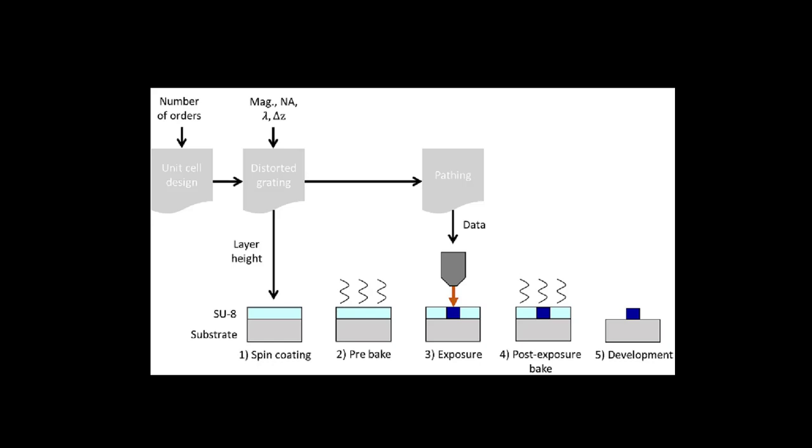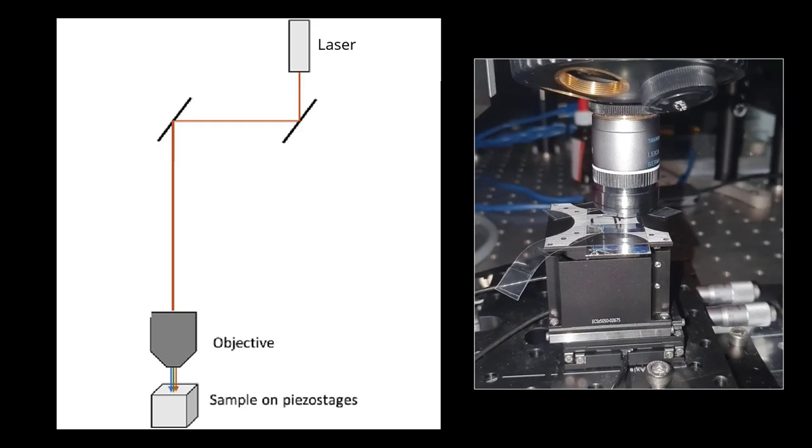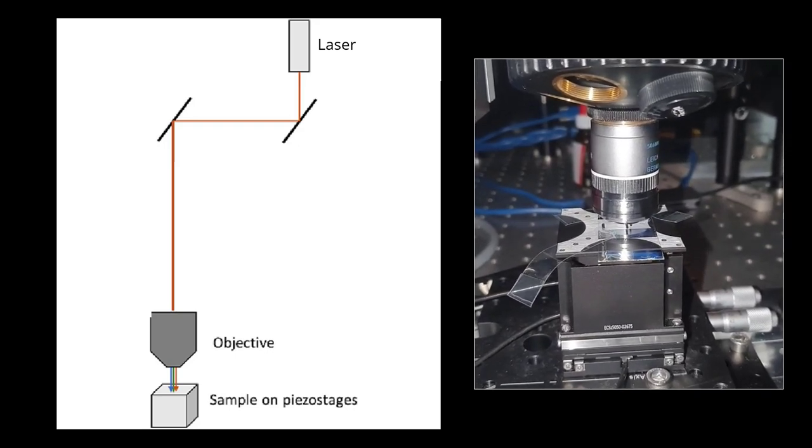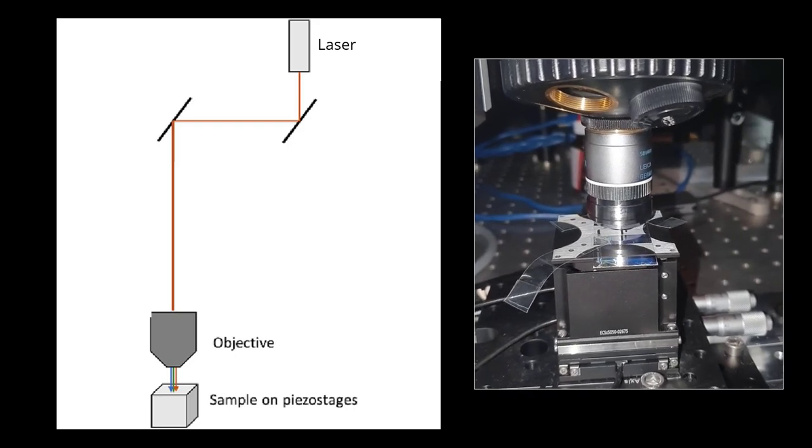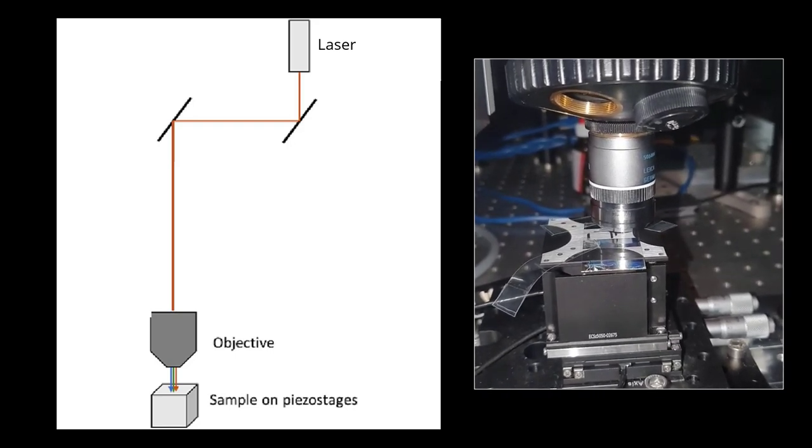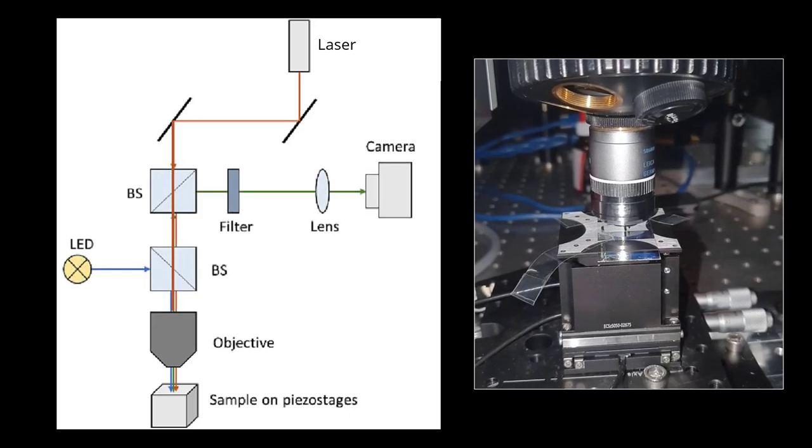In case you don't have a commercial lithography system, here's the one we built. Quite simple. A laser is focused onto the photoresist-covered glass plate, which is then moved by a piezo stage stack along the lines that define our grating. For checking how the sample is doing, we also added an LED and a camera.